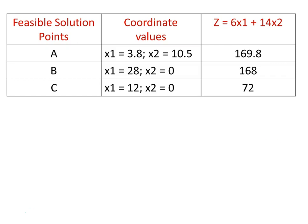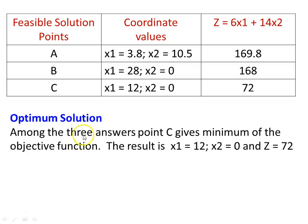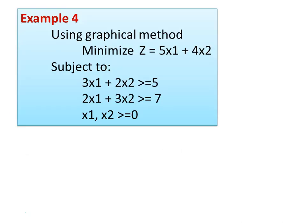The corner points are: A at X1 equal to 3.8, X2 equal to 10.5; B at X1 equal to 28, X2 equal to 0; C at X1 equal to 12, X2 equal to 0. Evaluating the objective function: point A gives 169.8, point B gives 168, point C gives 72. Since this is a minimization problem, point C gives the minimum. The result is X1 equal to 12, X2 equal to 0, and Z equal to 72.